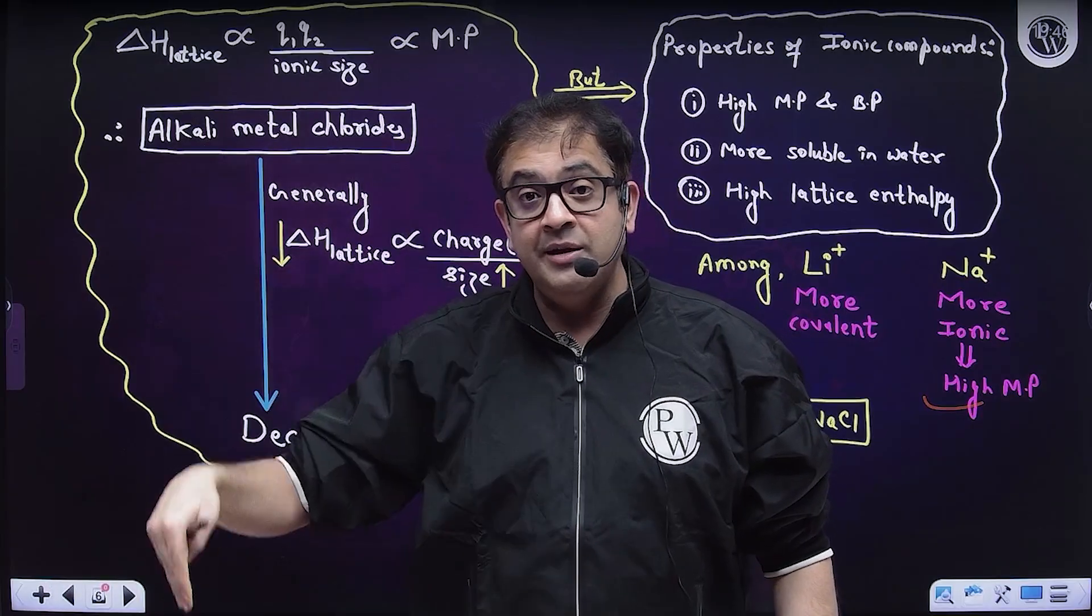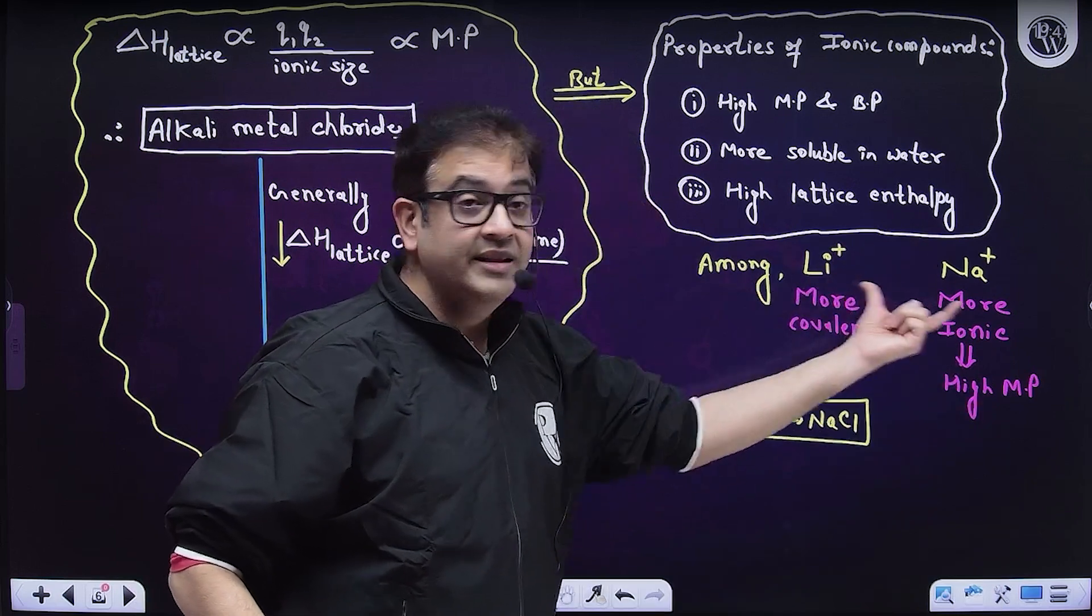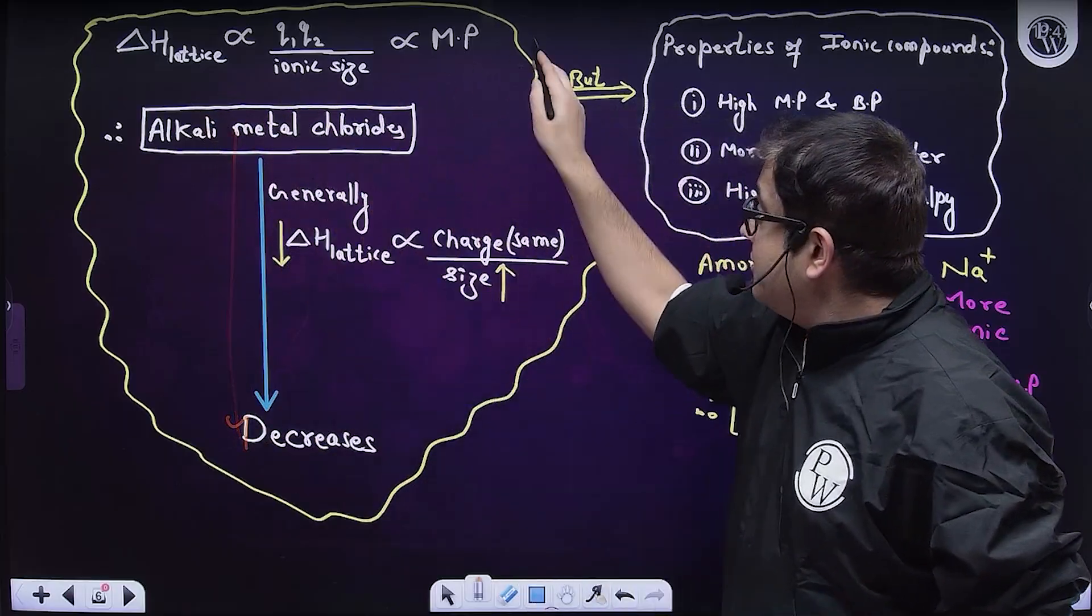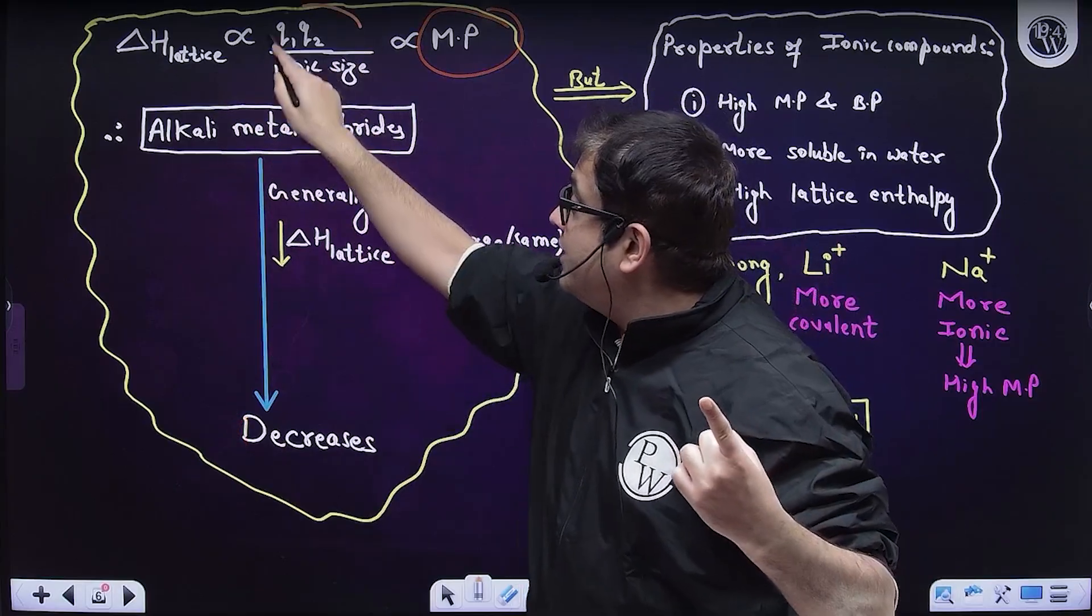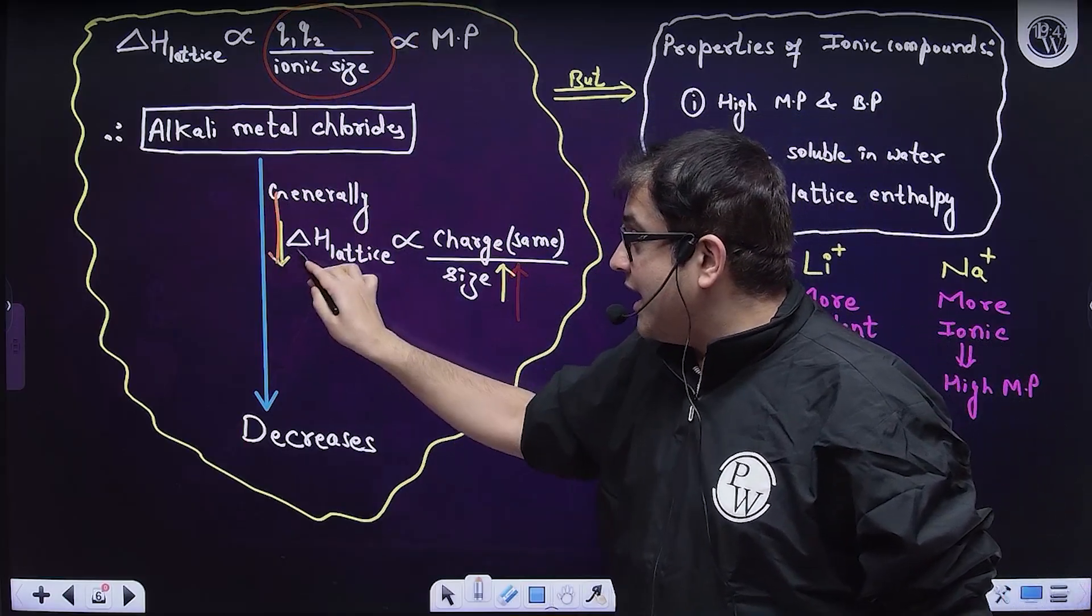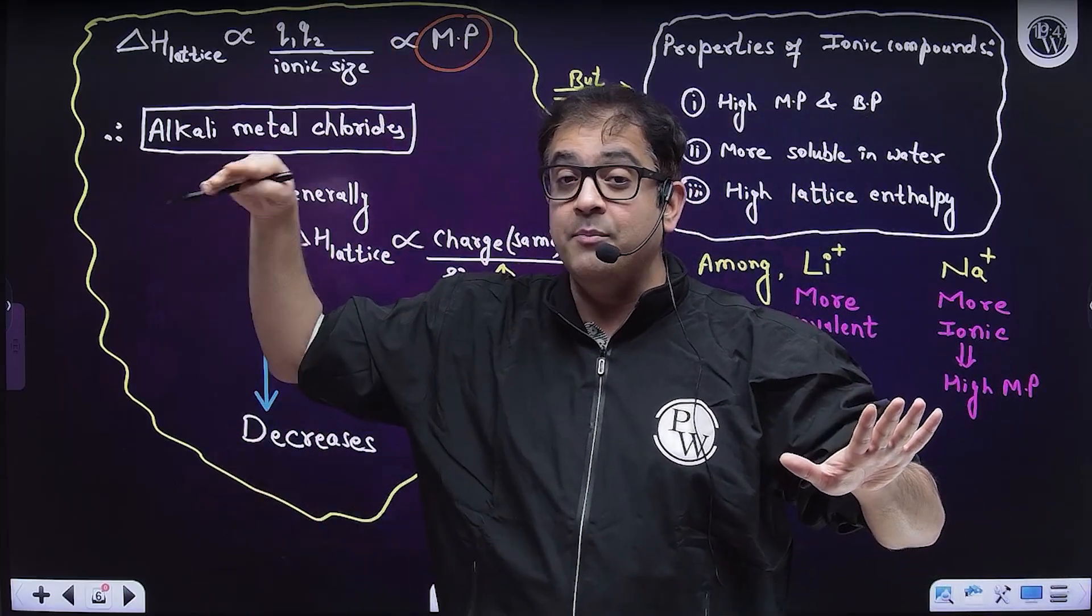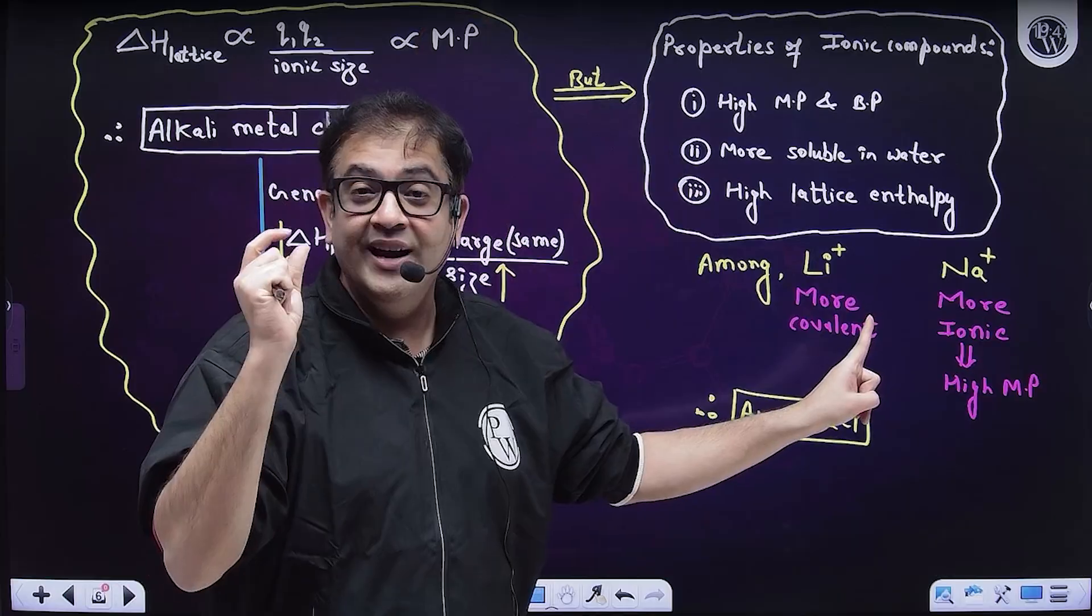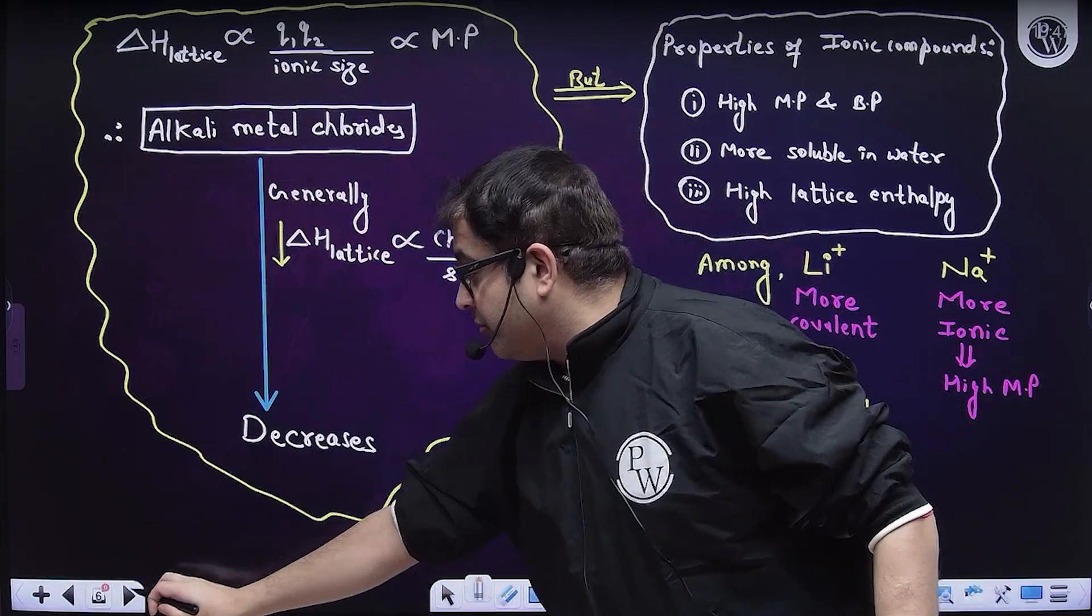If I compare LiCl and NaCl, then as per Fasan's rule, because Li+ cation will have more covalent nature, Na+ will have less covalent nature, that is more ionic nature, that means its melting point will be high. Why LiCl is losing battle only from NaCl? Because of high covalent nature. And why it is high? That you can only understand using Fasan's rule.